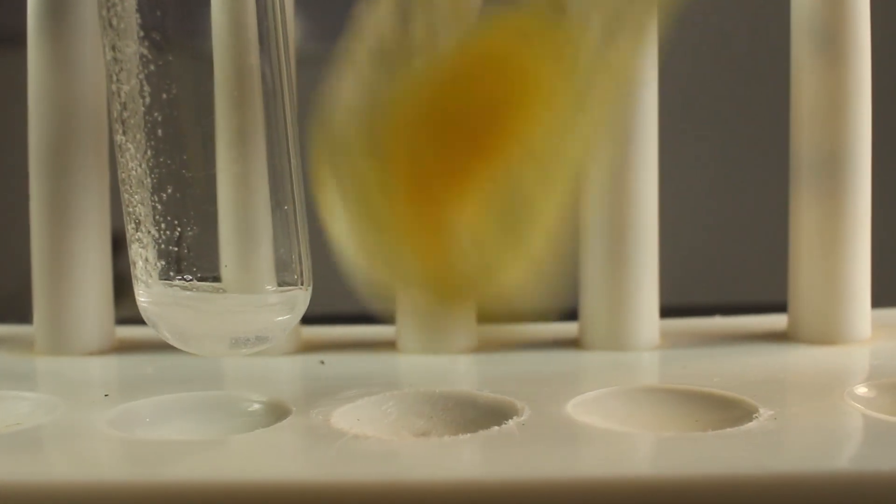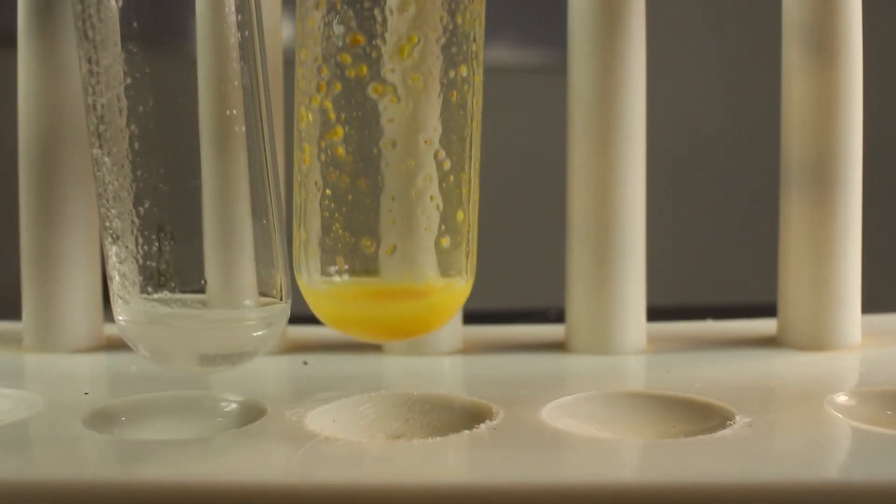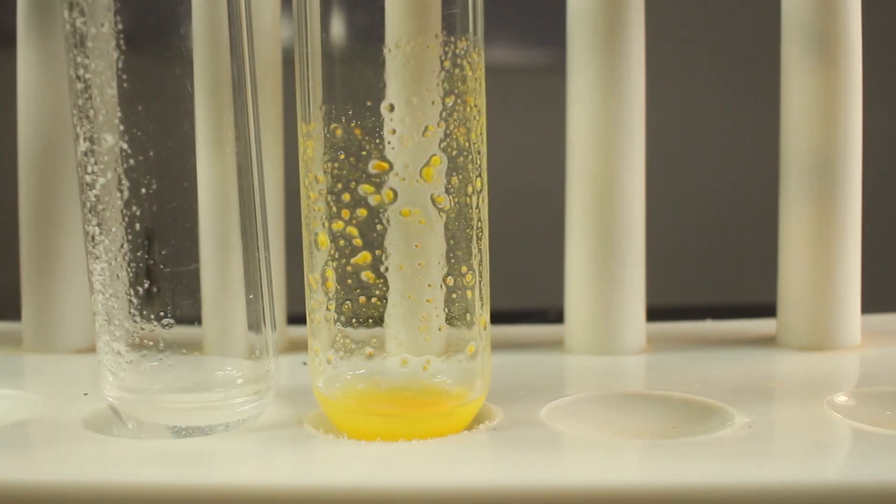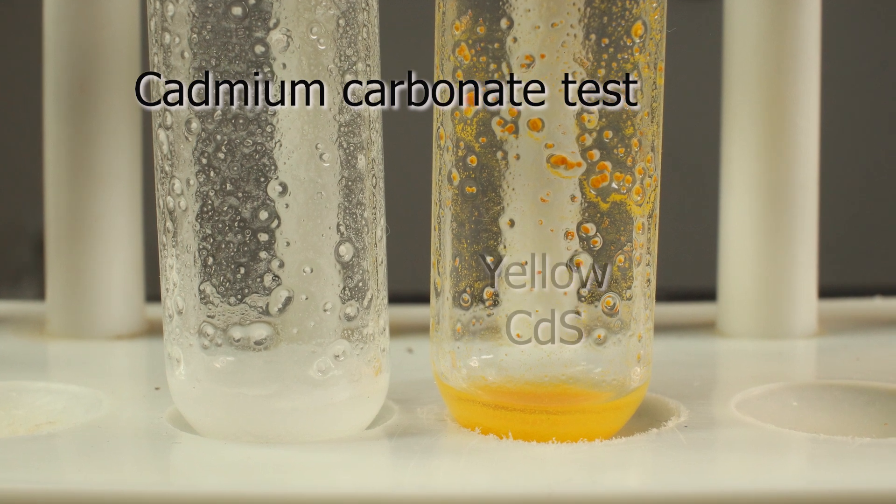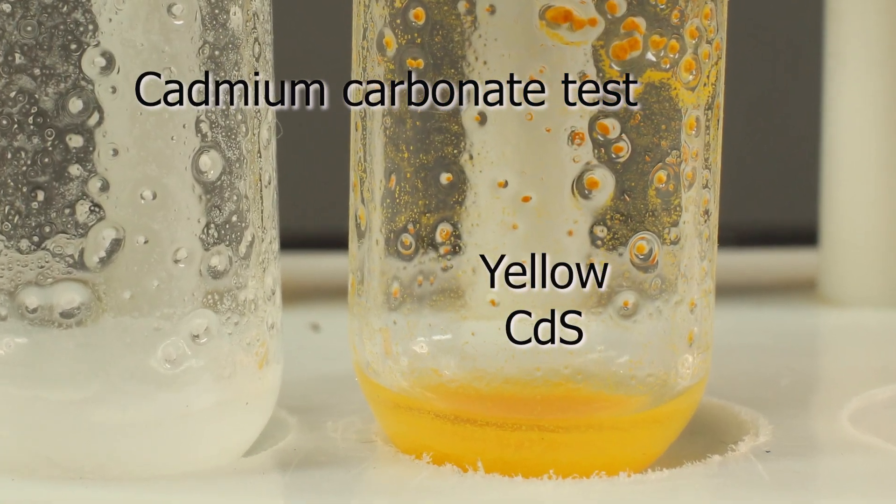Let's shake it up to see better. That's the result. Cadmium carbonate test. Yellow color is due to formation of cadmium sulfide, which is bright yellow.